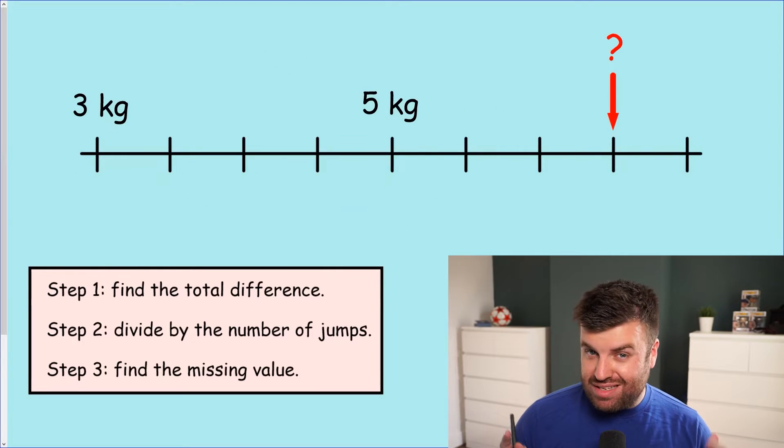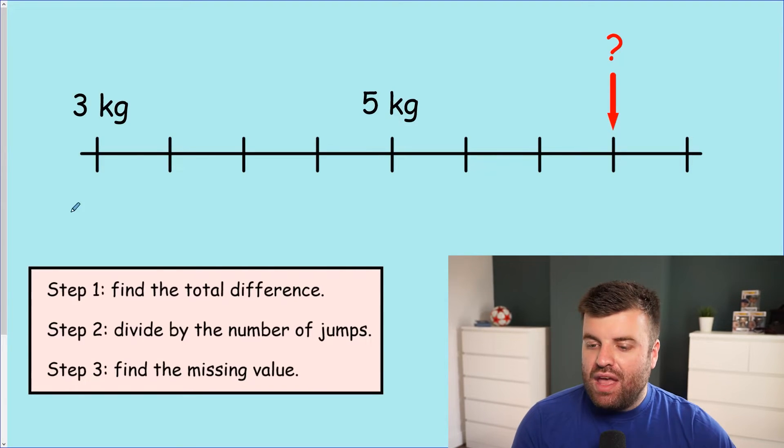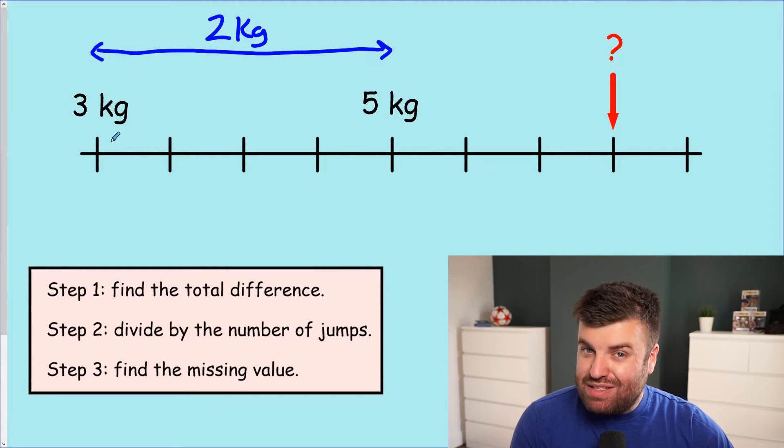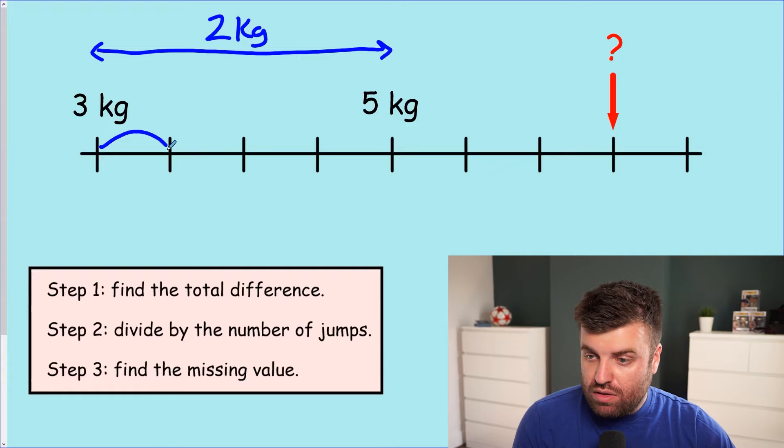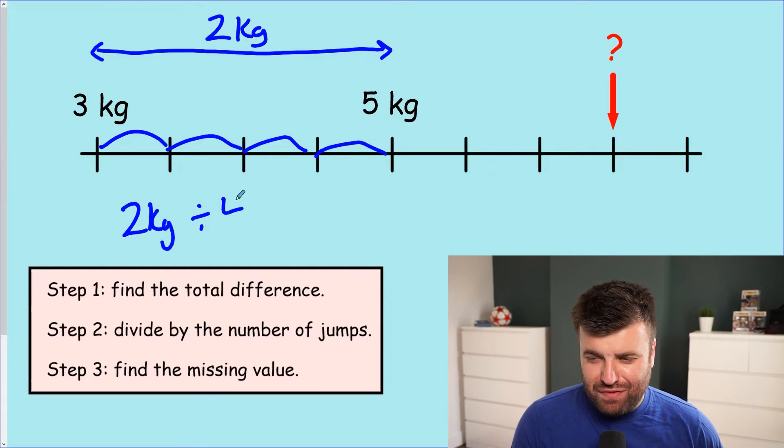So it's the last example now on just a simple number line. Why don't you pause this video, get your children to have a go, see if they can get the answer nice and quickly now that they're used to these steps. I'm going to dive straight in. So step one, find the total difference. We have three kilograms to five kilograms. This is interesting. This is only a two kilogram jump. Let's see how many jumps there are in between each interval here. So we've got one, two, three, four. Who paused it and had a go and spotted a little bit of a trick here?